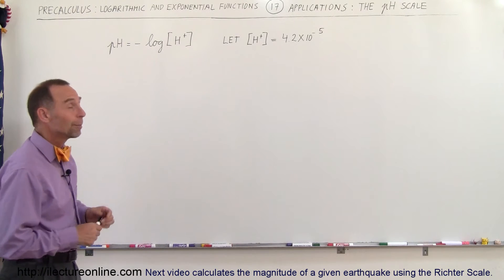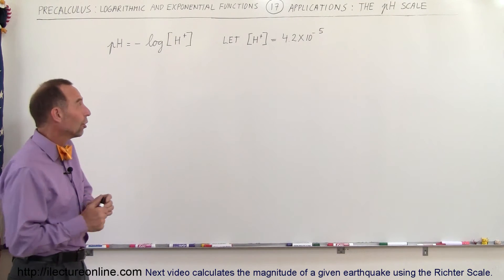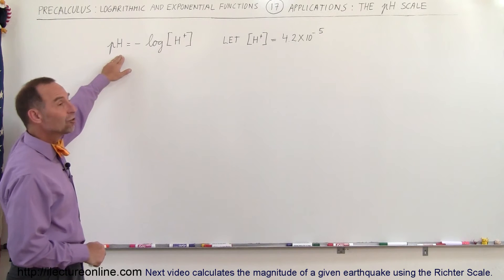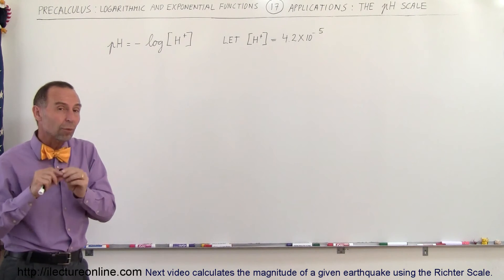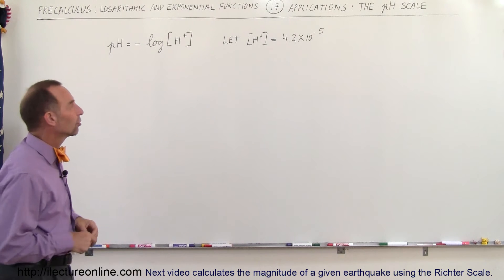Now you say well that doesn't sound like very much, but actually it makes a solution rather acidic. If the pH is below 7 then you have an acidic solution and the smaller the pH number the more acidic the solution is.